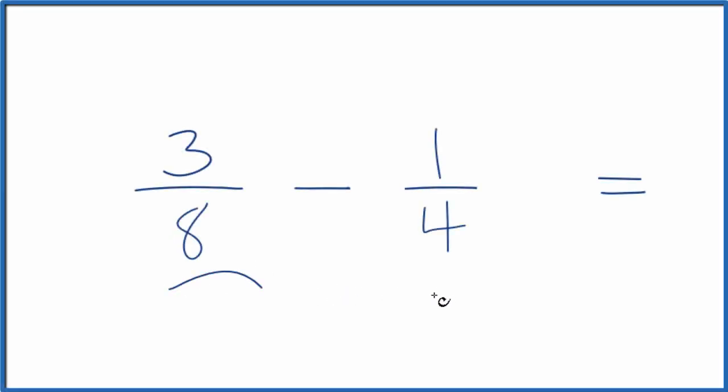Let's subtract 3/8 minus 1/4. So the question is we have 3 over 8 minus 1 over 4. What do we end up with? What fraction does this give us?